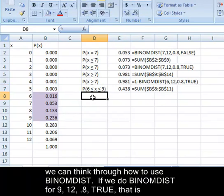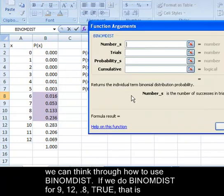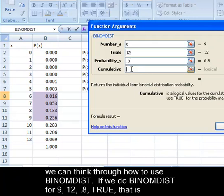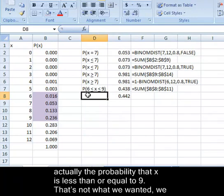Or we can think through how to use BINOMDIST. Well, if we do BINOMDIST for nine, twelve, point eight, true, that is actually the probability that x is less than or equal to nine.